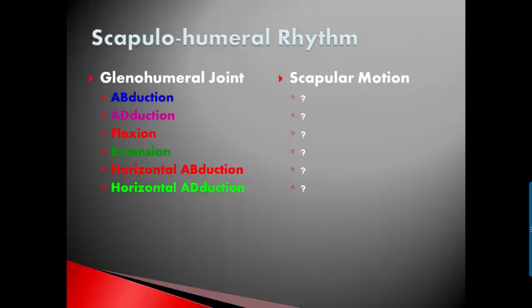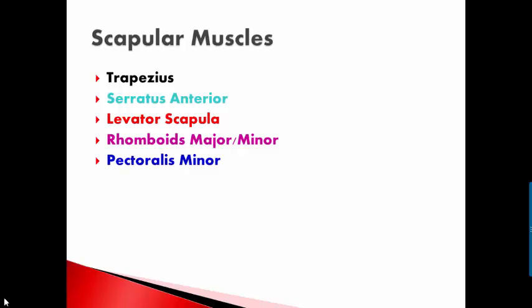A task for you: for these glenohumeral joint motions — abduction, adduction, flexion, extension, horizontal abduction, and horizontal adduction — can you describe the scapular movements that go along with those motions? This is a good topic for one of your biomechanical concept videos. Now let's look at the muscles. You have the trapezius, the serratus anterior, levator scapula, rhomboids major and minor, and pectoralis minor. These six muscles do not cross the glenohumeral joint. Their job is to take the scapula and create the optimal movement on the thorax to enable maximal glenohumeral joint motion.